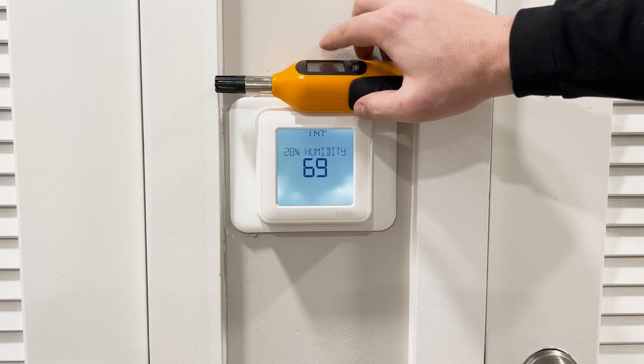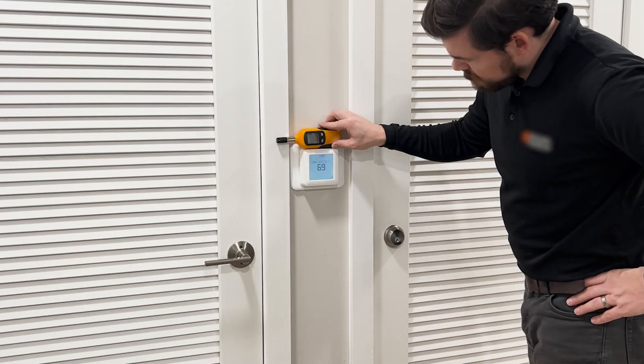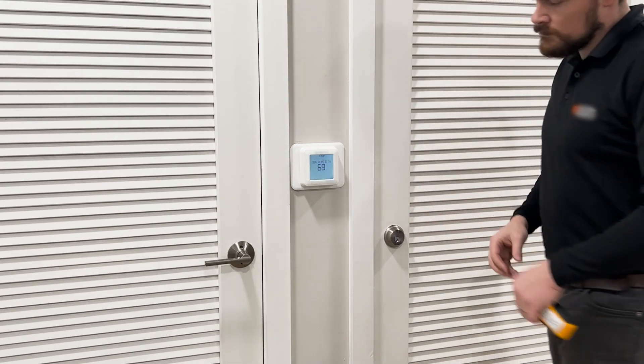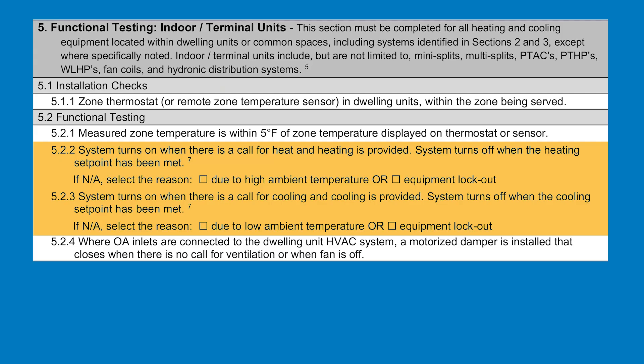Let the equipment acclimate to the room temperature. Once it hits steady state, confirm that it is within 5 degrees Fahrenheit of what the thermostat or temperature sensor is reading. For Sections 5.2.2 and 5.2.3, confirm that the system turns on when there is a call for heating or cooling, and then turns off when the set point has been met.